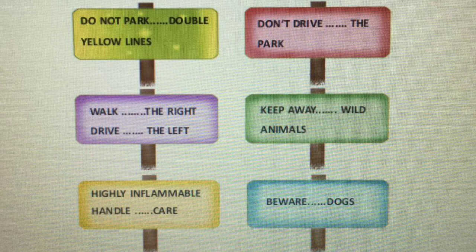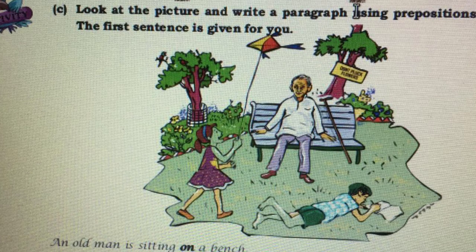Part C: Look at the picture and write a paragraph using prepositions. The first sentence is given for you. An old man is sitting on a bench. He has kept his walking stick beside him.